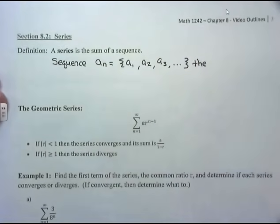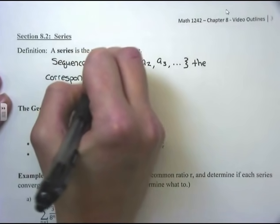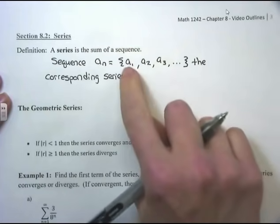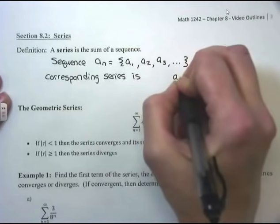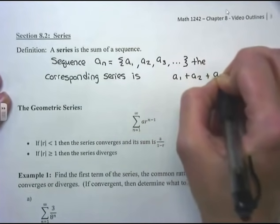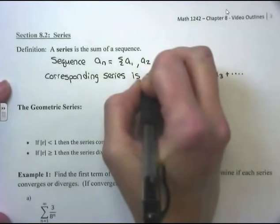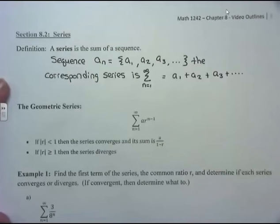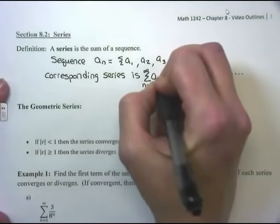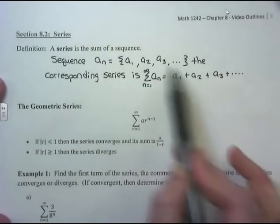The corresponding series is just the addition of these terms: a1 plus a2 plus a3, etc. Of course, I'm going to use sigma notation to condense this writing. Starting with the first term and going up to an infinite number of terms of the sequence a_n. So the sequence is the listing of the terms; the series is the addition of those terms.